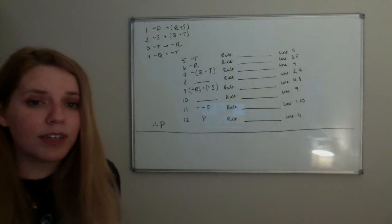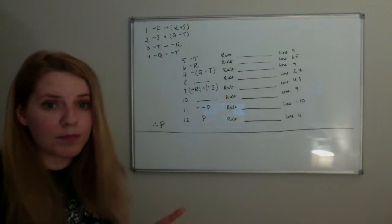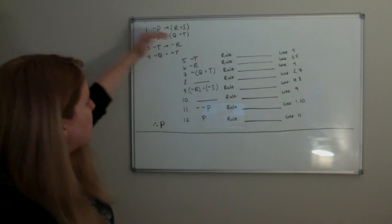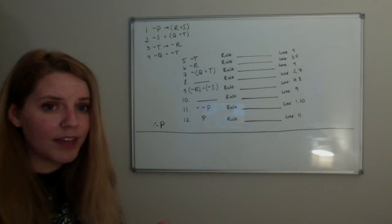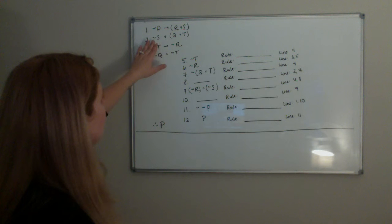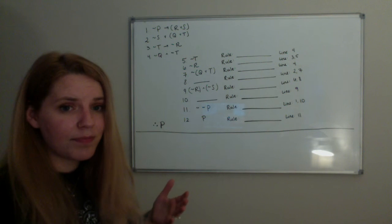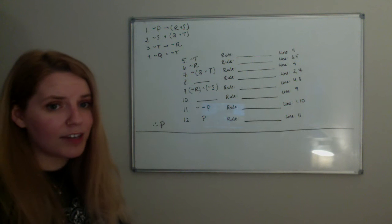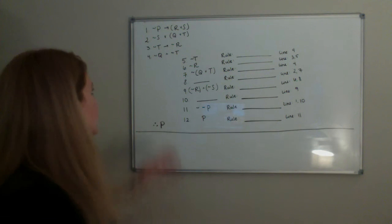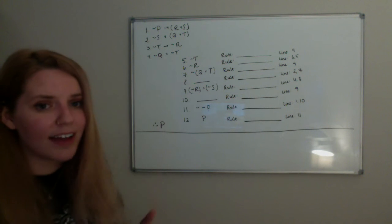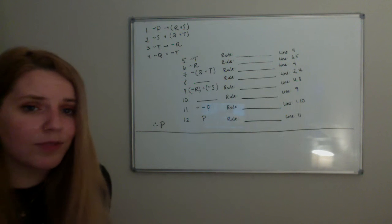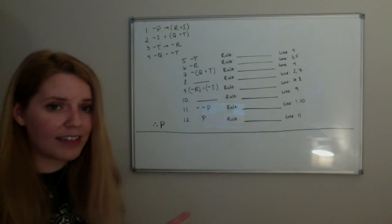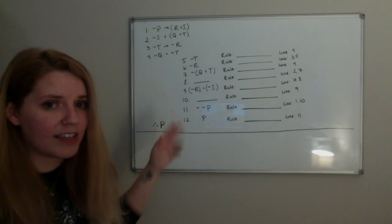We're going to start with this proof. There are four premises. The first premise is: if not P, then R or S. The second premise is: not S or Q or T. The third premise is: if not T, then not R. And our last premise is: not Q and not T. From this, we can deduce the conclusion P. It takes a lot of steps to get there from the premises to the conclusion.